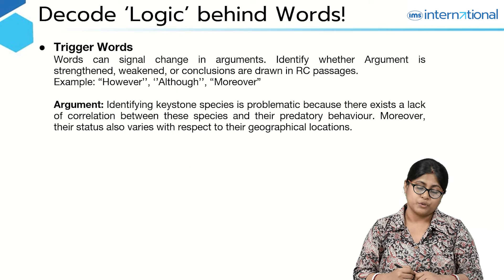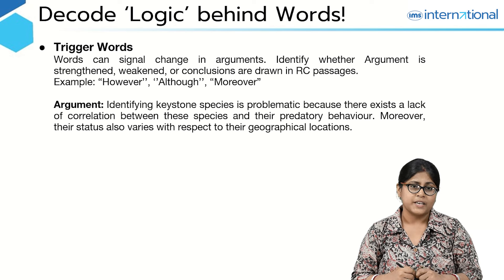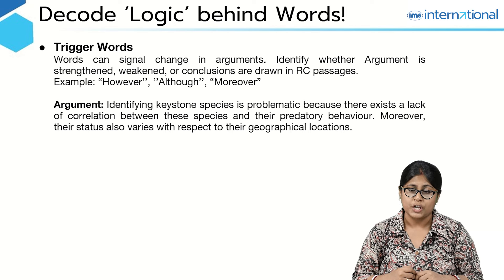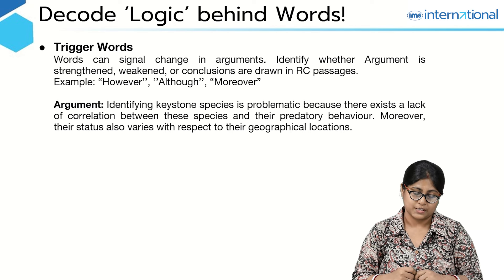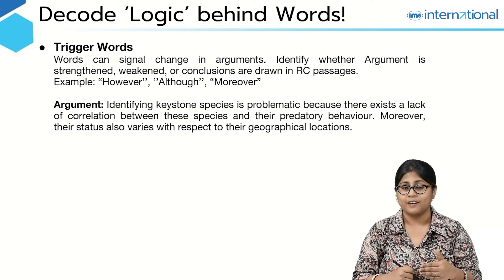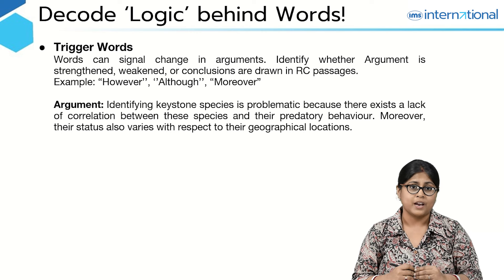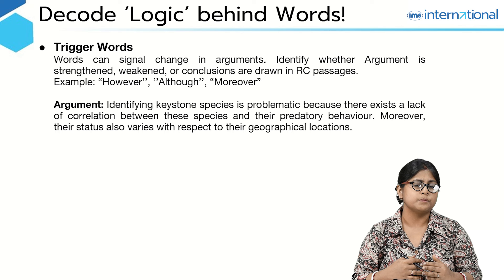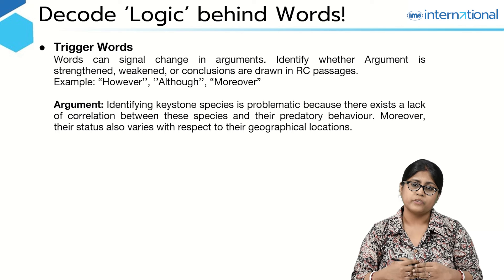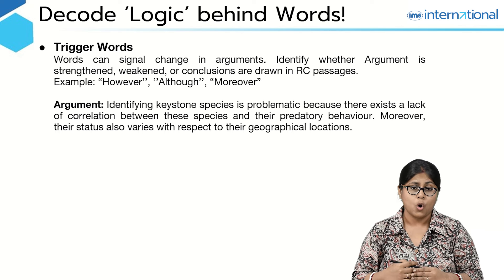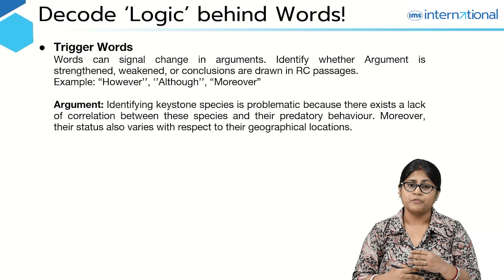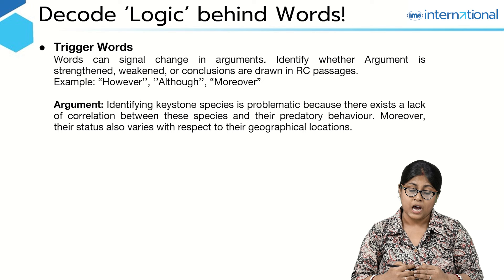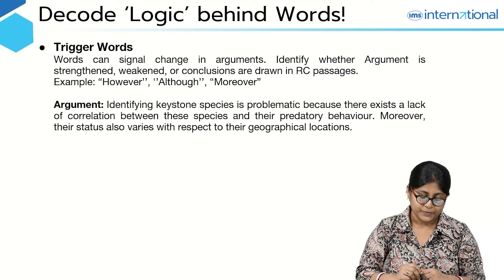Coming to the next important point: there are some words in a reading comprehension passage that we technically call trigger words or transition words. These words tell us how to track an argument — whether an argument stated in the first paragraph is getting strengthened, weakened, or whether a new context is put forth. Examples of these words include 'however,' 'although,' 'moreover,' etc.